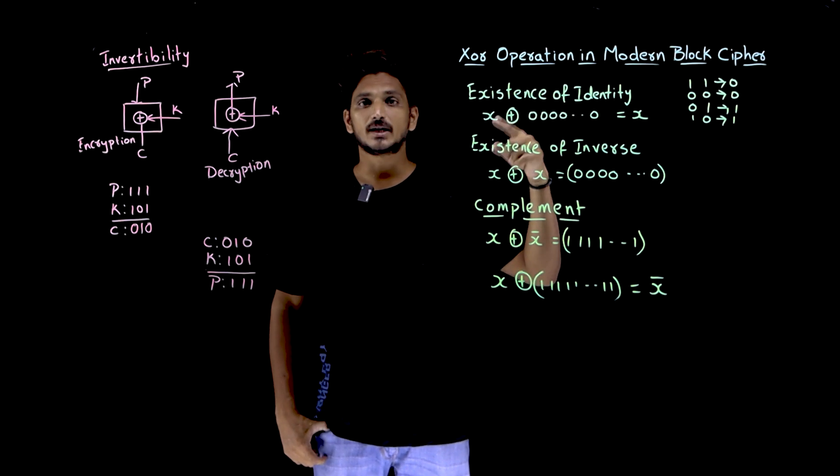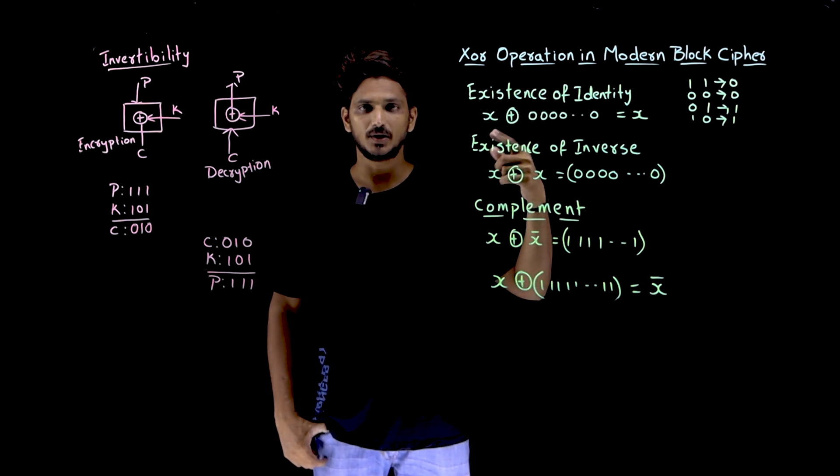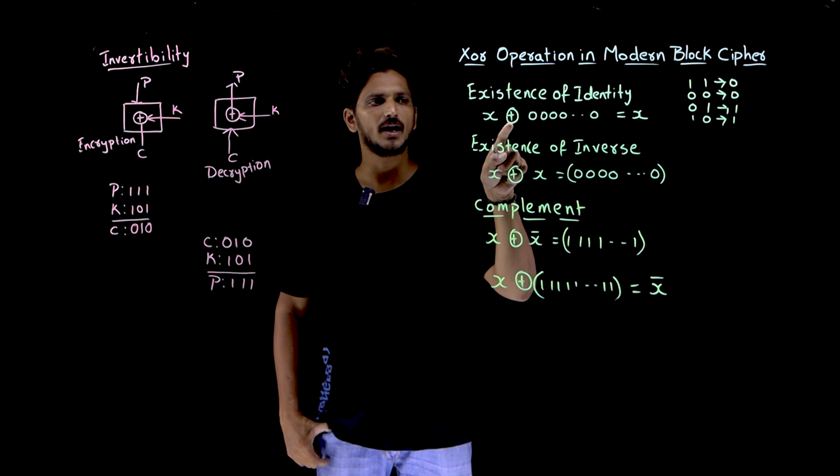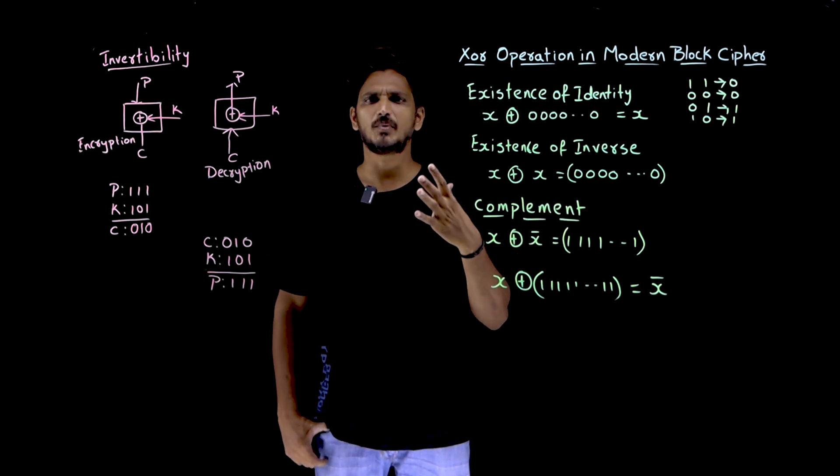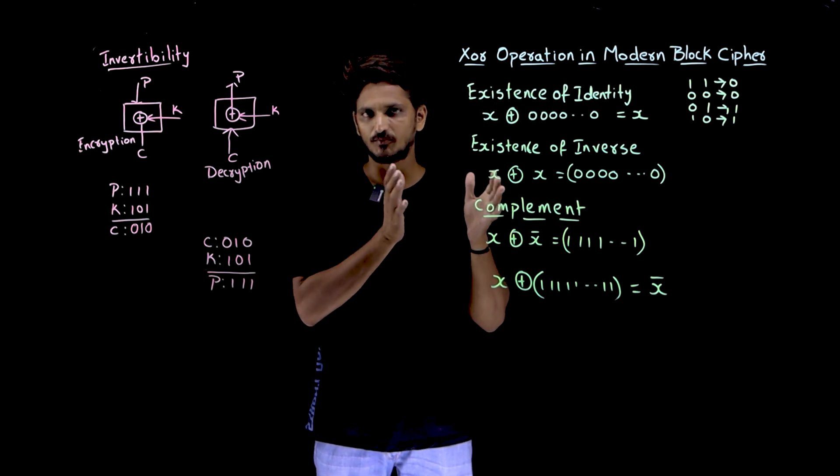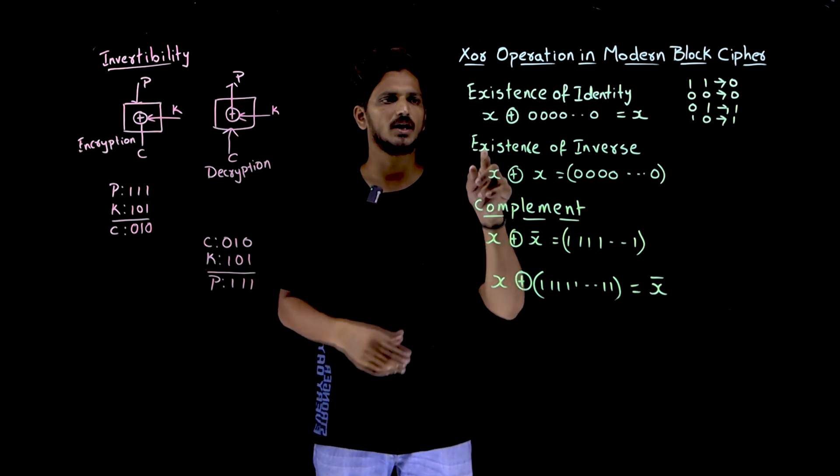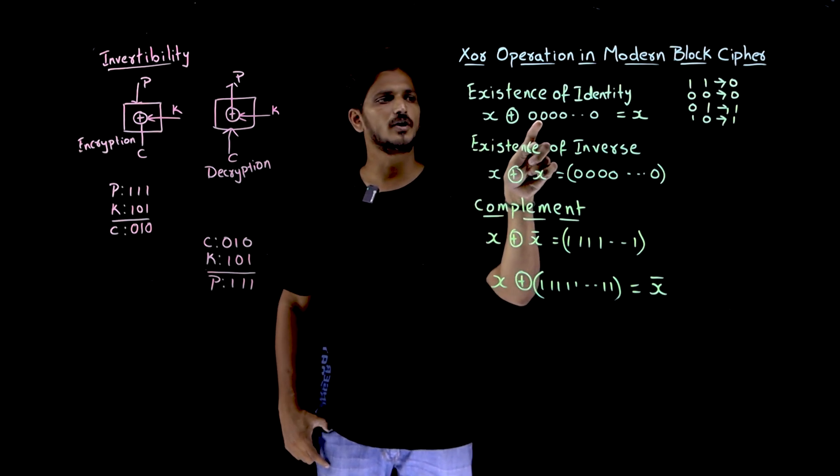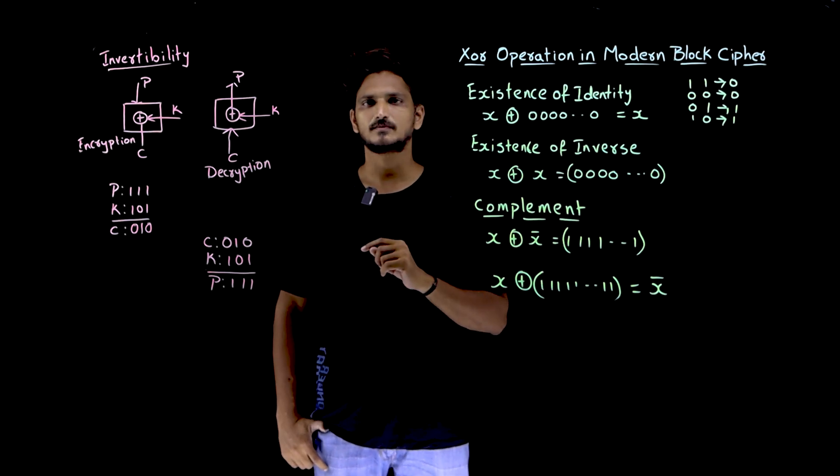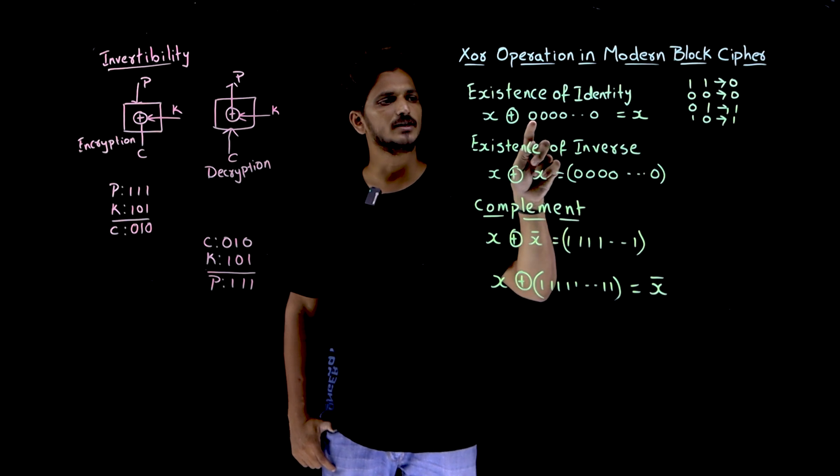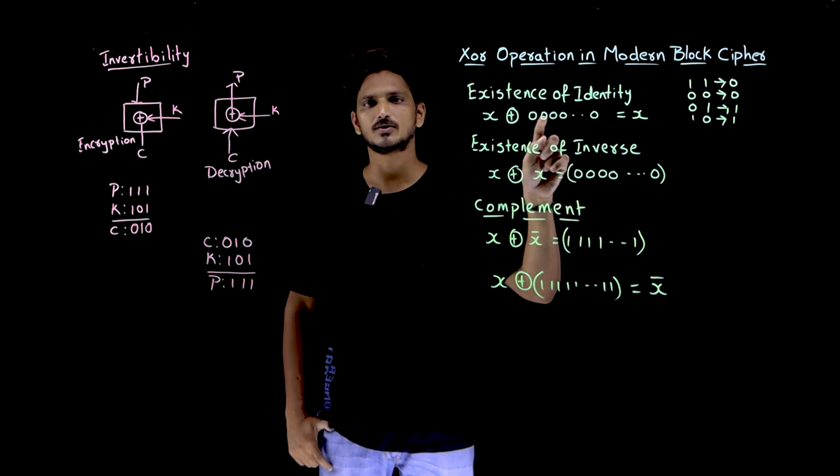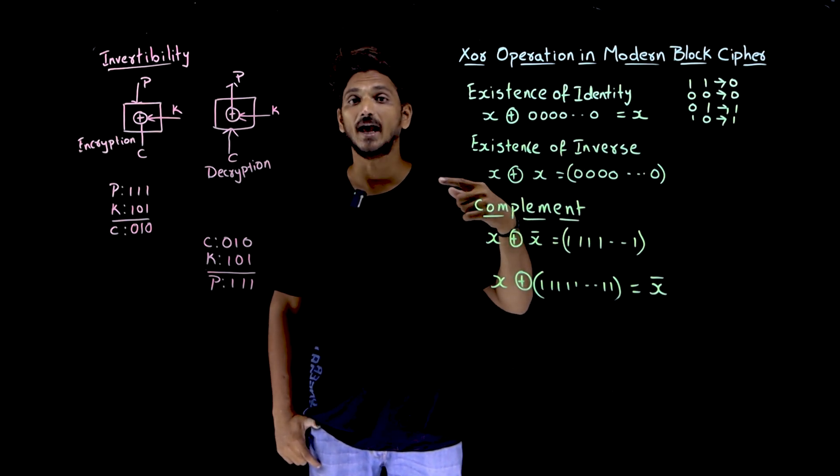XOR operation is working as a group means it is going to provide identity element. You take any binary operation, you take a set of bits, two set of bits, X XOR of all zeros, it is going to give you X. So that is why this value, all zeros, we call it as identity element.